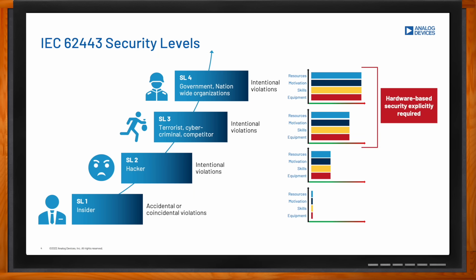IEC 62443 considers four security levels. At the bottom, Level 1 is related to accidental or non-intentional violations where the resources and motivation of hackers are low. At the top, Level 4 corresponds to intentional violations by government or nationwide organizations with virtually unlimited resources and highly skilled personnel. Levels 2 and 3 fall in between, related to intentional violations with varying levels of resources, motivation, and skills.